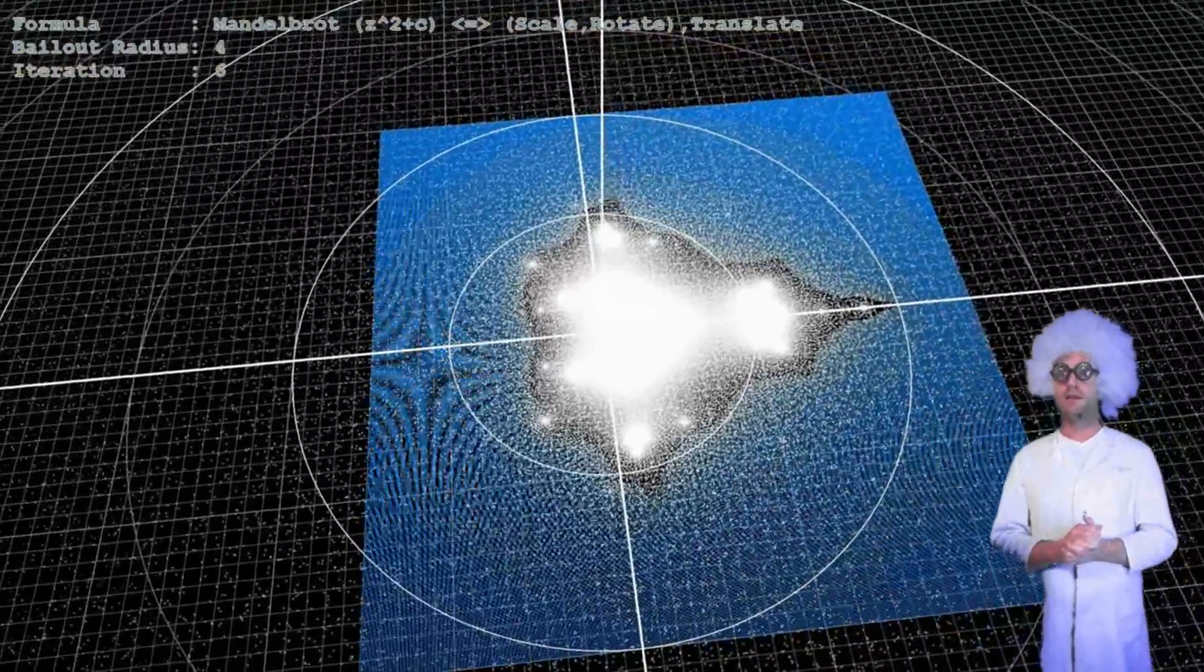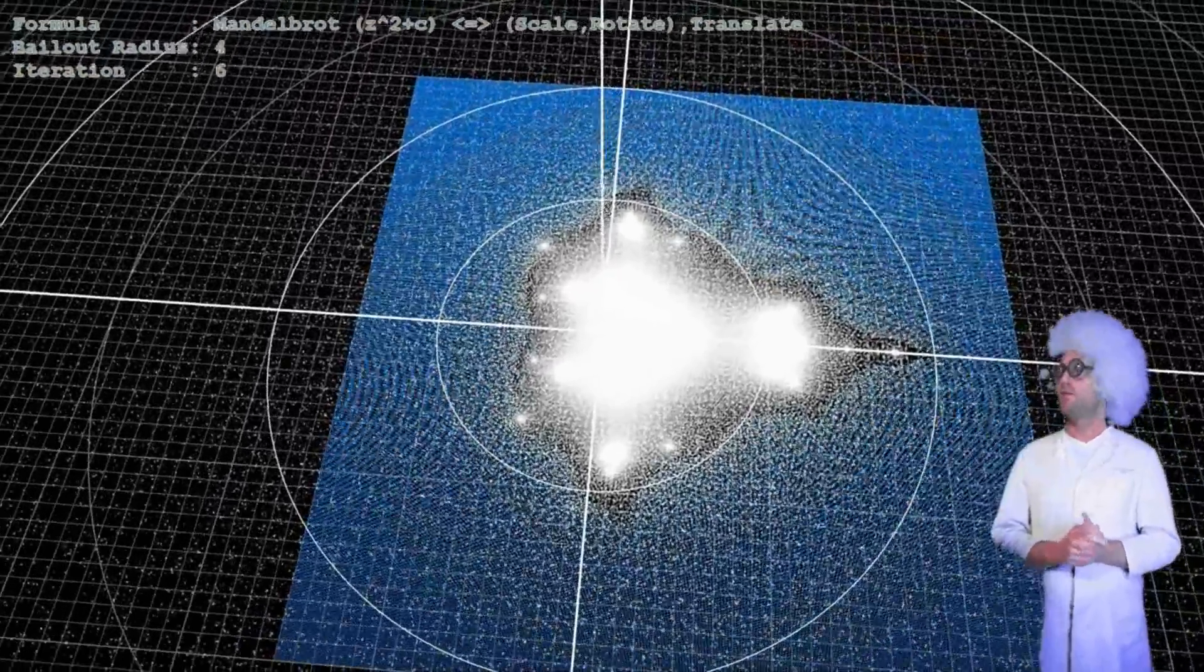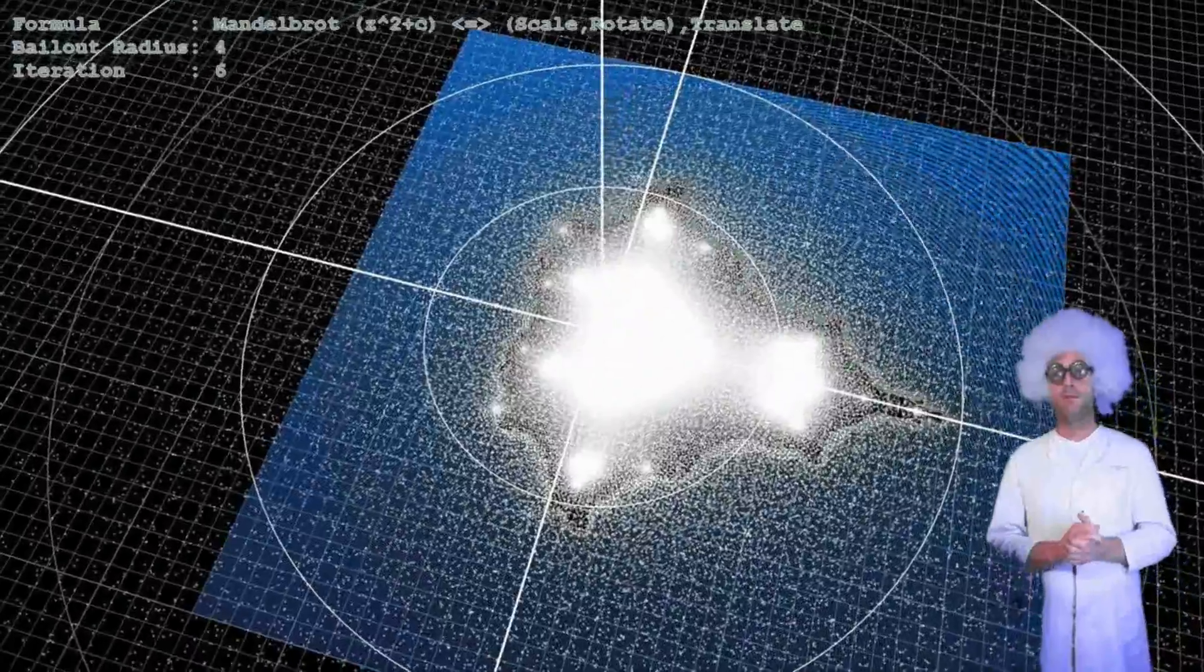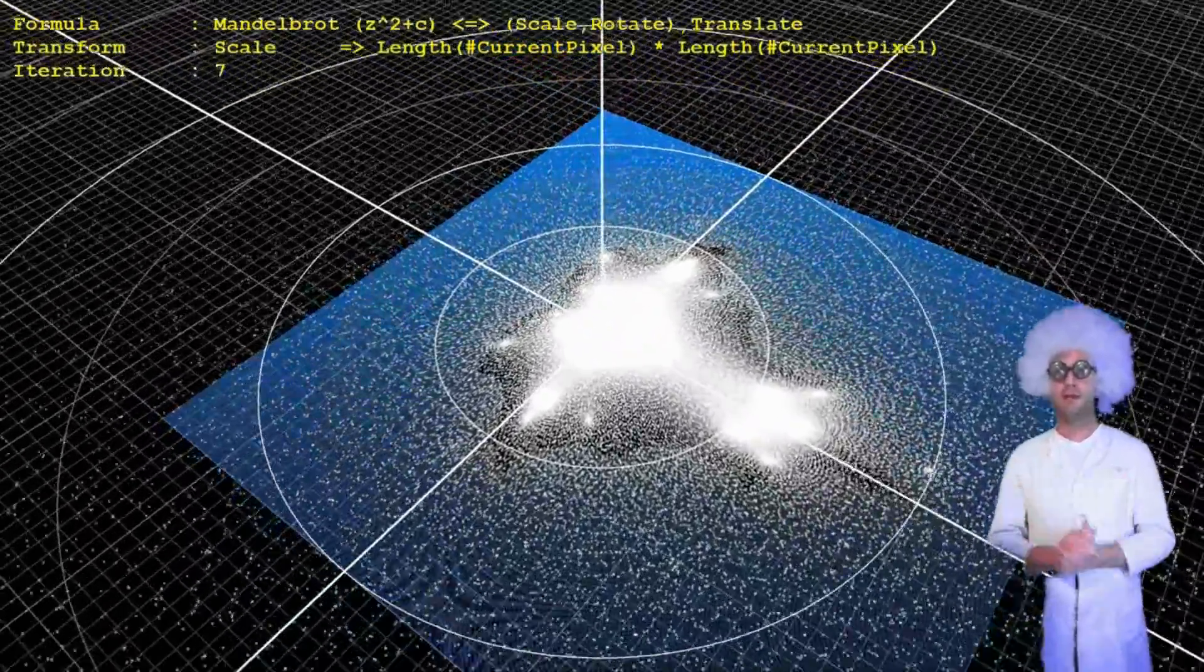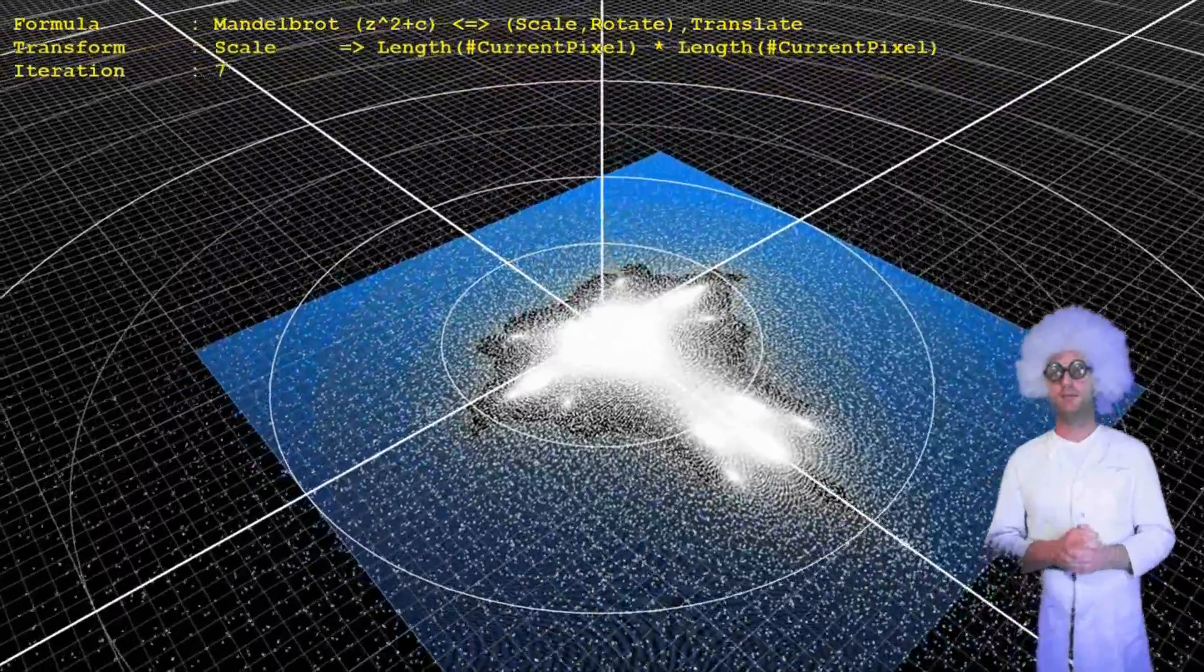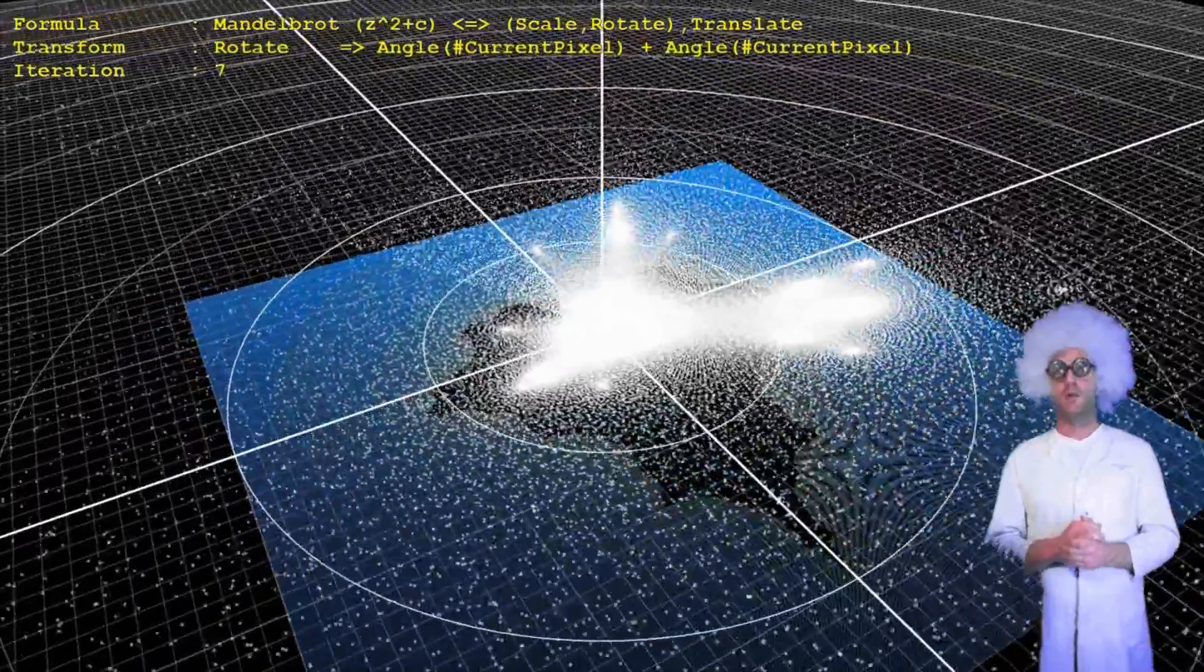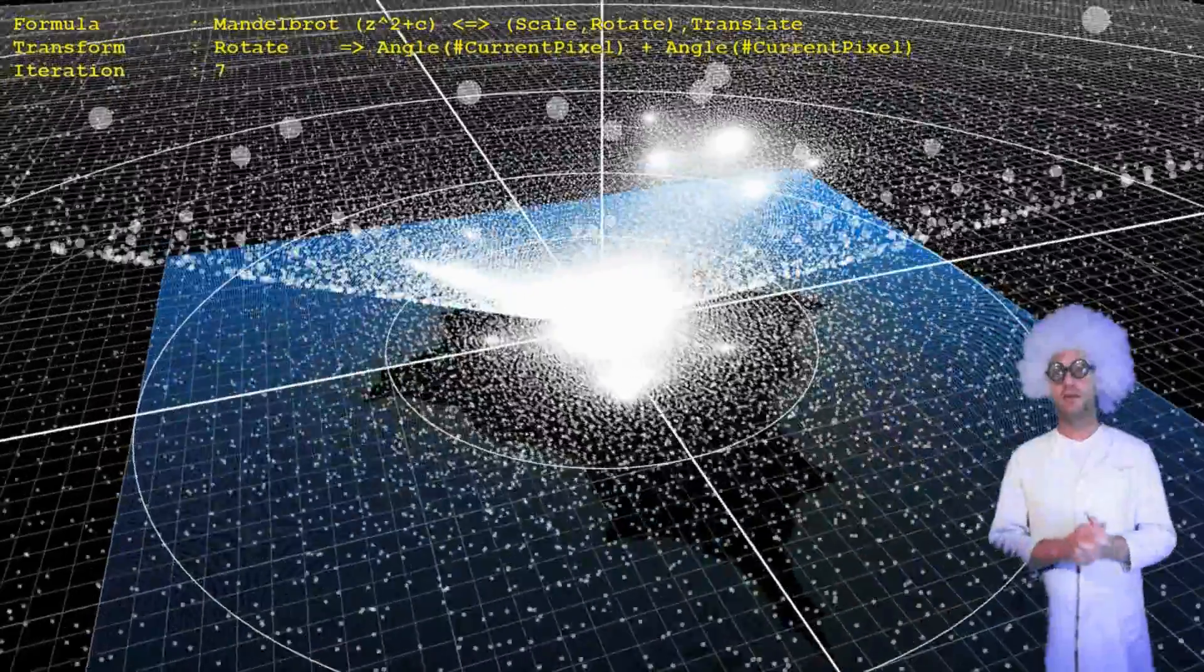The bailout distance chosen here is 4. Points leaving this circle never come back, because 4 squared is already 16, and the points will never be reduced to zero again.